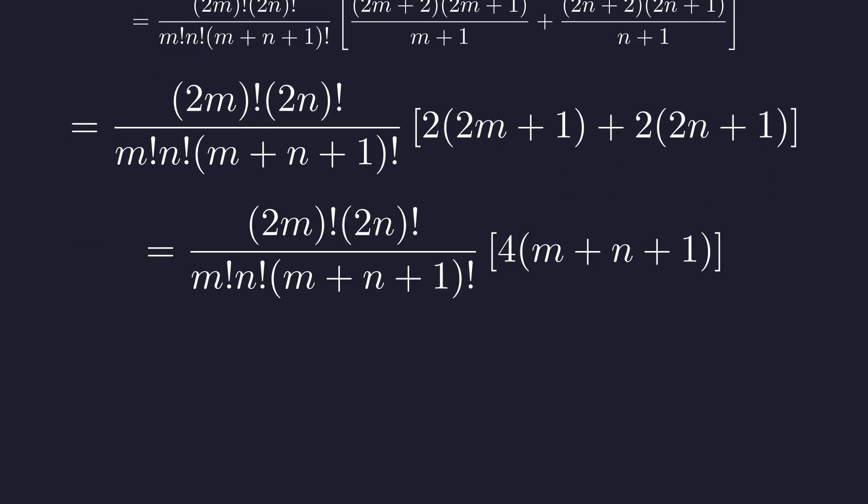And here's where things get really interesting. When we combine those terms in the brackets, we get 4 times the quantity m plus n plus 1. Do you see what's about to happen? This is the key insight. Since the factorial of m plus n plus 1 equals m plus n plus 1 times the factorial of m plus n, that factor of m plus n plus 1 is going to cancel perfectly.